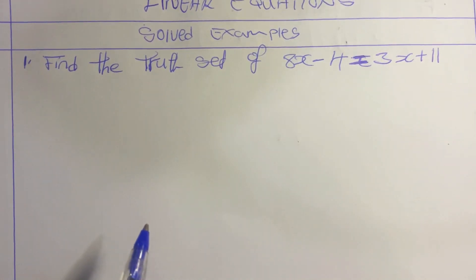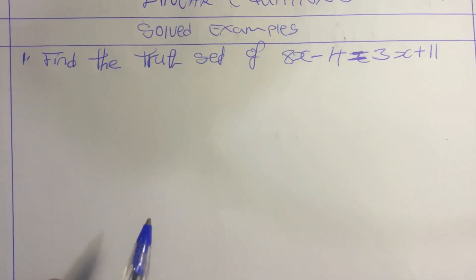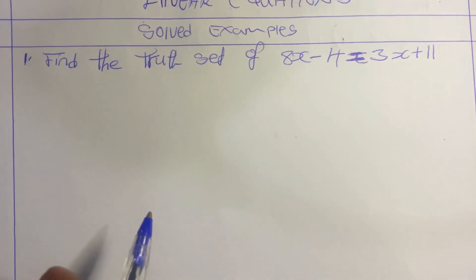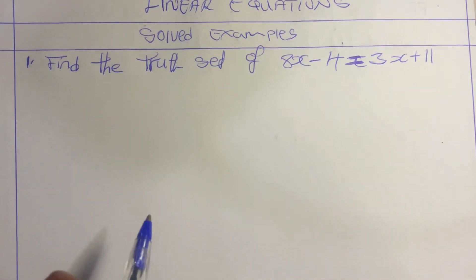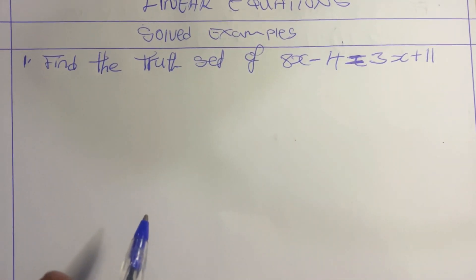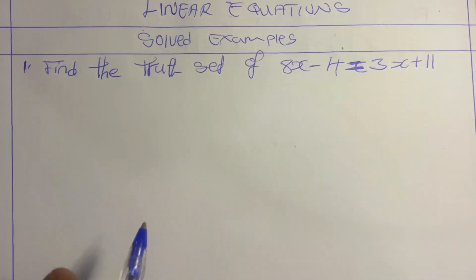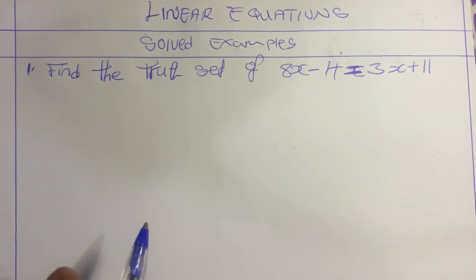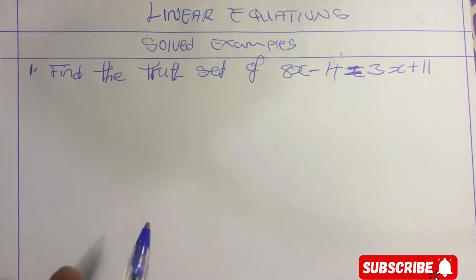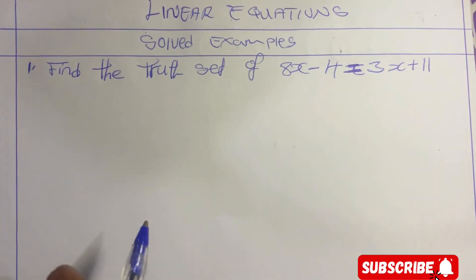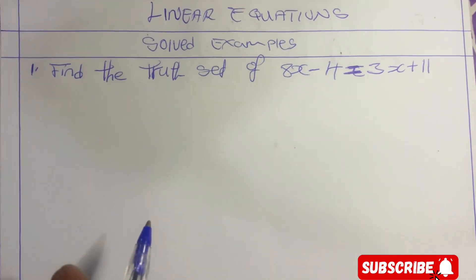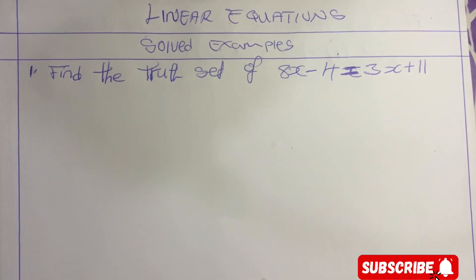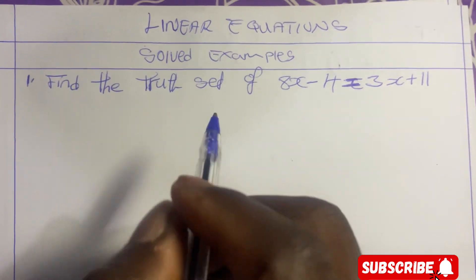We are solving linear equations and will go through a few examples under this topic. The first example is to find the truth set of 8x minus 4 equal to 3x plus 11.